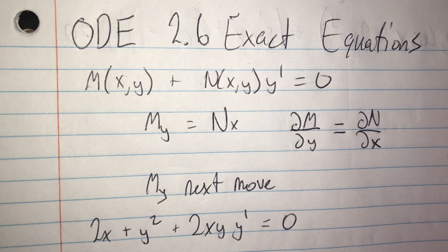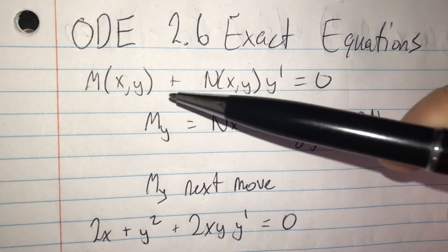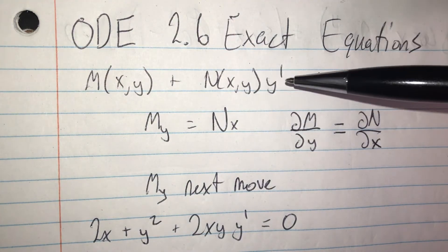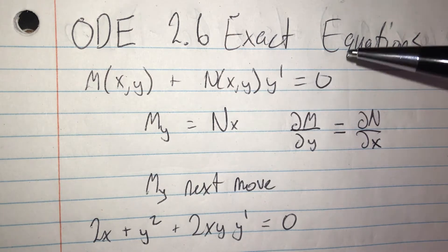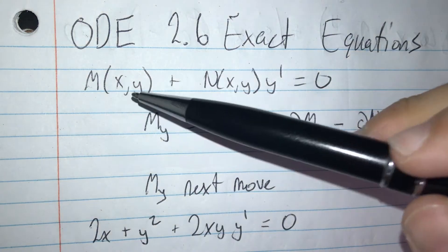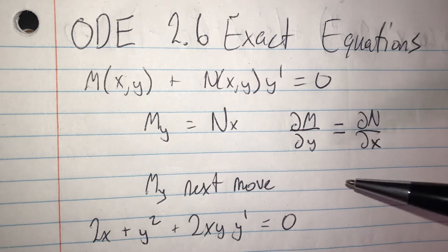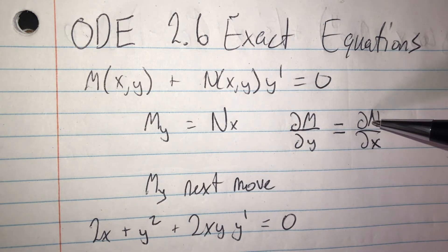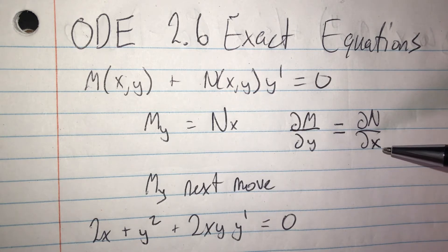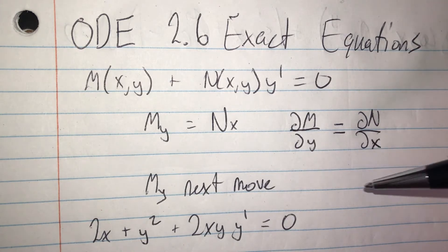Welcome to Differential Equations, Chapter 2, Section 6. In this section, we will be learning about exact equations. Previously, we had the format where we had some function M of x and y, and some function N of x and y times y prime equal to 0, and it was separable. In this case it is not separable, so we use a different method. We can identify an exact equation by taking the partial derivative of M with respect to y and setting it equal to the partial derivative of N with respect to x — these two must be equal.